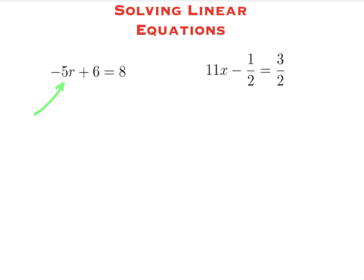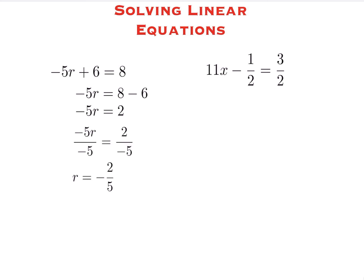To get rid of the minus 5, the operation between it and the variable is multiplication, so we undo that with division. First, subtract 6 on both sides of the equation. Then divide across by negative 5 — negative 5 divided by negative 5 is 1, leaving just r. The fraction 2 over negative 5 gives us a final answer of negative 2 fifths.